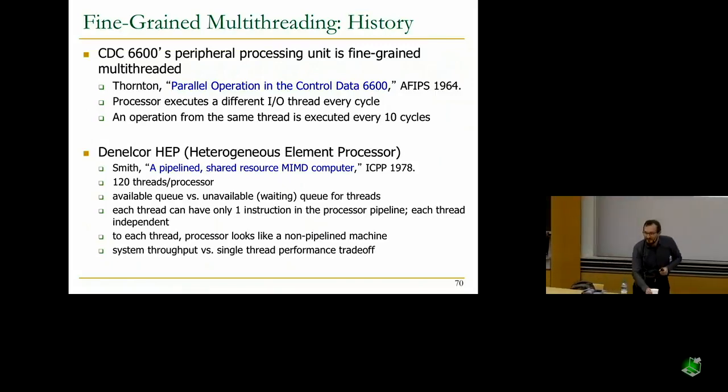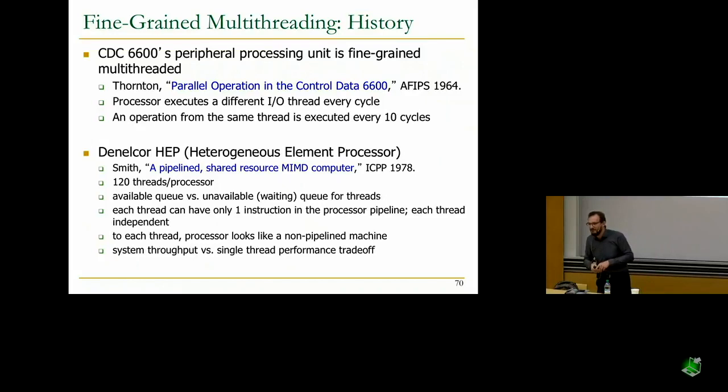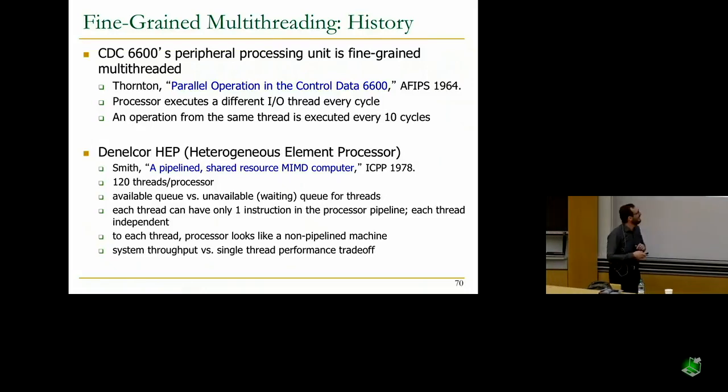Student question: How can you ensure isolation here? How can you ensure that one thread doesn't access registers from another? So there are separate register files. I'll show you an example. If you're fetching from thread zero, you go to the register file for thread zero. That's the hardware cost. That's a good question.